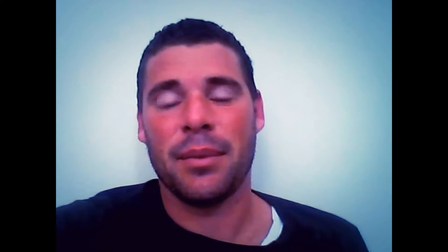Now I'm going to give you the more complex solution. We'll go through a full calculation because there are a lot of variables. Total kilowatt hours used for the year from your energy bill, divided by 1550 hours, gives you total DC system size in kilowatts.